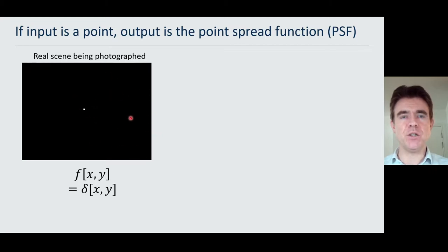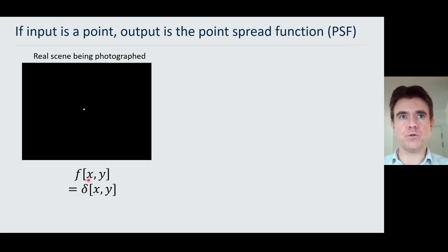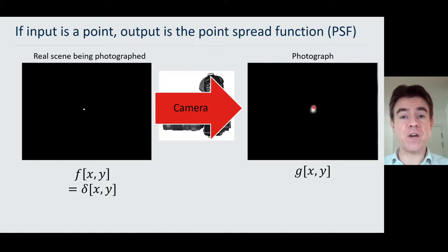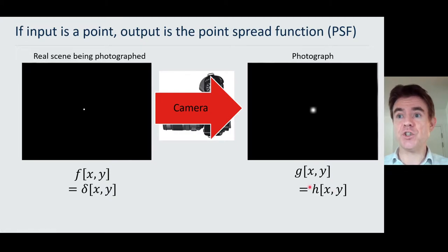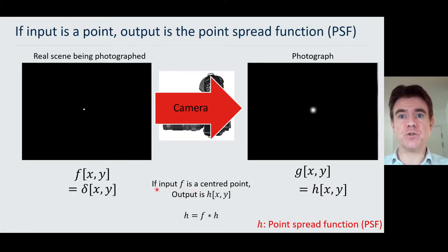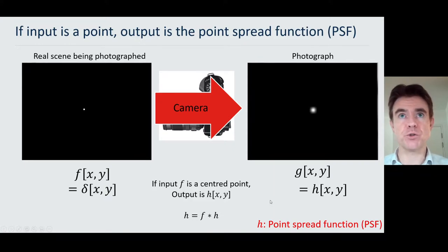Let's build up towards the convolution integral. Here the scene being photographed is initially just a point source of light — consider it as one star in the night sky. Our input function f(x,y) is just a discrete delta function: a value of one at that pixel and zero elsewhere. Running it through the camera, we get the camera's point response or point spread function, which is just the convolution kernel. So the output g is just the kernel when the input function is a point.